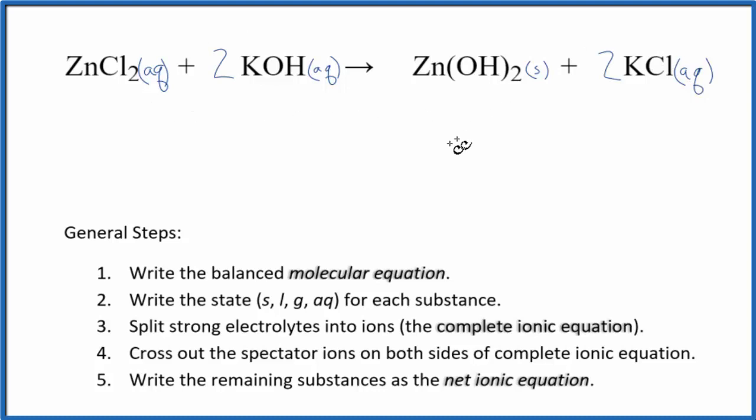So we have the states. Now we can split the strong electrolytes into their ions. We call this the complete ionic equation, sometimes called the total ionic equation.